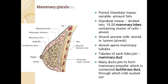In human reproduction, we have already discussed about the male reproductive system and the female reproductive system. In the female reproductive system, certain part was left — that is mammary glands. Mammary glands, as you all know, is a pair of glandular tissues which consists of variable amount of fats. The glandular tissues are divided into 15 to 20 lobes which contain a cluster of cells which we call alveoli.